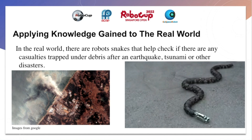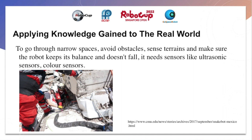Using the knowledge I have learnt, I can apply it to the real world by using robots to help check if there are any casualties trapped under debris after a disaster. To go through narrow spaces, avoid obstacles, sense terrain, and keep the robot balanced, it needs sensors like ultrasonic sensors and colour sensors. The colour sensors can also be used to sense the colour of blood, which will send a signal to rescuers to prioritise that particular victim's rescue to ensure their survival.